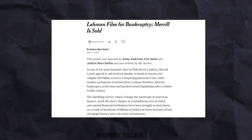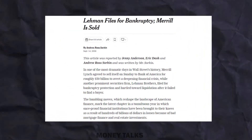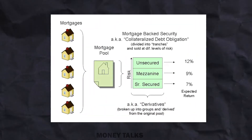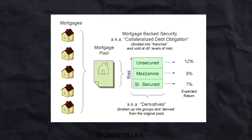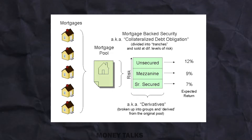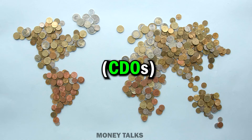During the 2008 crisis, the main problem was the mortgage-backed securities, which were filled with risky and worthless loans. But bigger than mortgage-backed securities were the CDOs, which were the nuclear bomb that brought down the whole world economy.